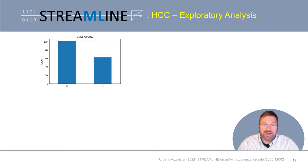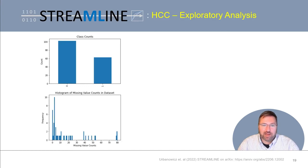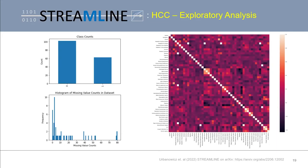Now let's take a brief tour of a selection of the many figures automatically generated by Streamline. For the exploratory analysis phase, it generates bar or box plots of univariate analyses. Here we have a bar plot showing the relationship between one of the categorical features and our binary outcome, a histogram summarizing the number of missing values found in features across the dataset, and a heatmap of feature correlations within the data. The heatmap is particularly useful when deciding whether to remove highly correlated features or when interpreting model feature importance estimates.